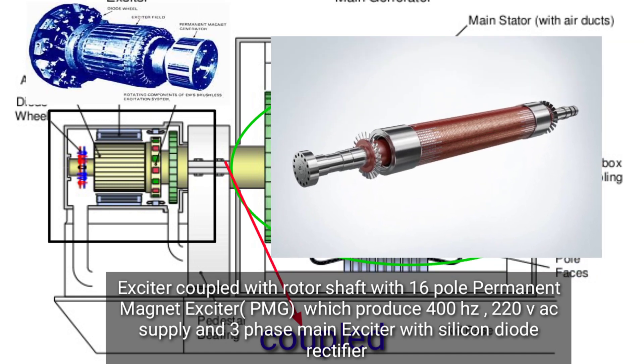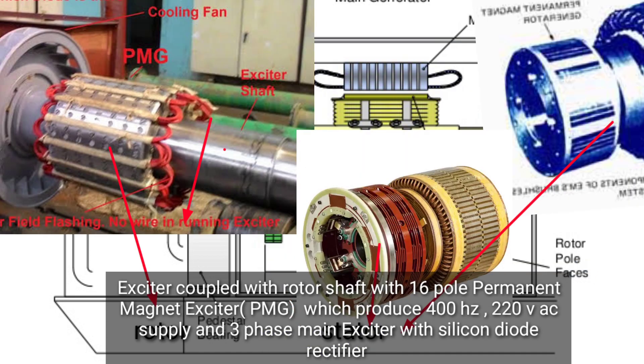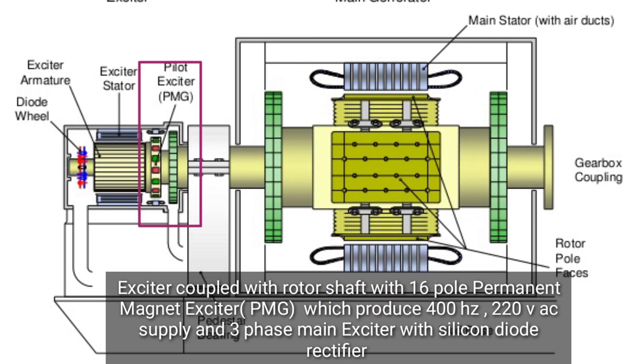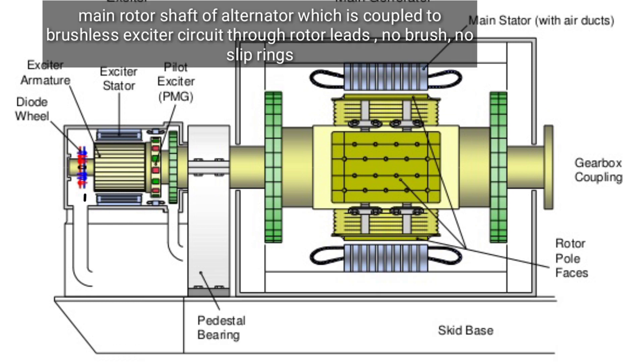Here are the parts of the exciter: a 6-pole permanent magnet exciter PMG which produces 400 Hertz 220 VAC supply, and a three-phase main exciter with silicon diode rectifier. This is the main rotor shaft of the alternator which is coupled to the brushless exciter circuit through rotor leads. No brushes, no slip rings.